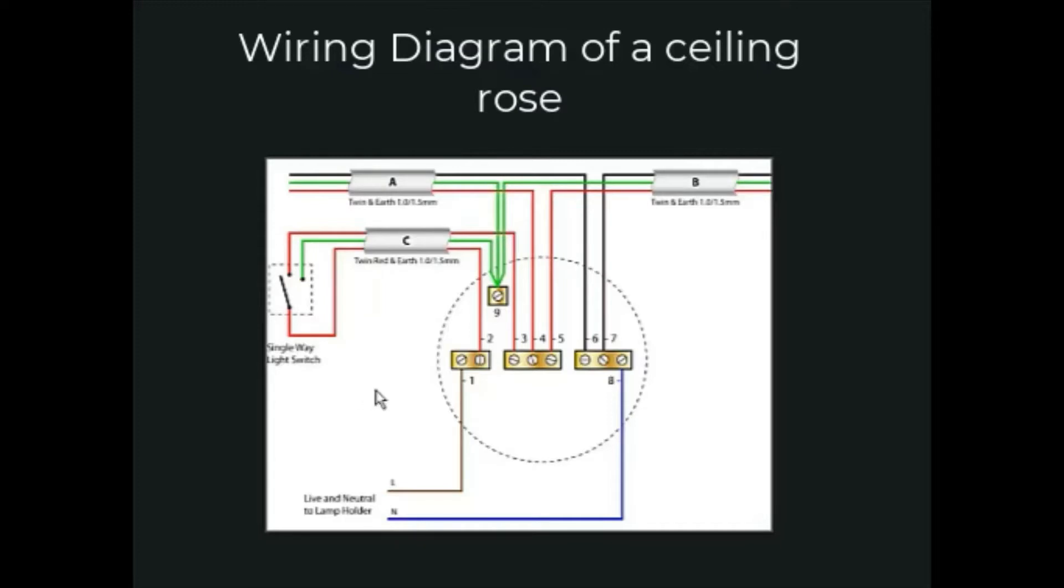In the diagram three terminals are shown. The blue wire goes to the right neutral terminal, the red wires go to the middle live terminal, and the brown live wire from the light pendant goes to the left terminal. The diagram shows a loop in loop out configuration.